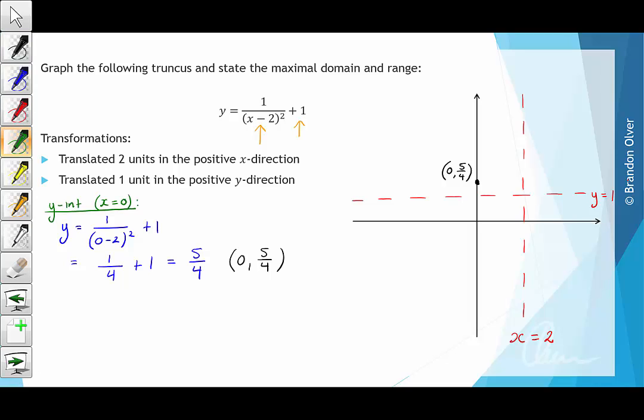Next we need to look for any x intercepts, and we know the x intercepts occur when y is equal to 0. So when we do this, we have 0 is equal to 1 divided by x minus 2 all squared plus 1. When we're solving for this, we just need to use our algebra skills. We subtract 1 from both sides, and we find that negative 1 is equal to 1 divided by x minus 2 all squared.